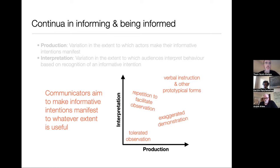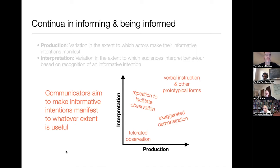The unifying hypothesis is this: what communicators aim to do is make their informative intentions manifest just to the extent that it's useful. When they need to be overt, they need to talk, to point, to nod, to do something very clear — then they will do so. But when they don't need to do so, they will make their informative intentions manifest to some lesser degree. I think that's a unifying hypothesis, and a great deal of both the literature in experimental cognitive psychology and in anthropology is consistent with that.